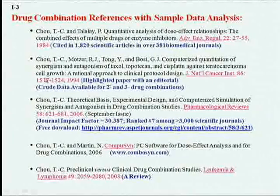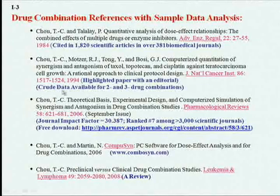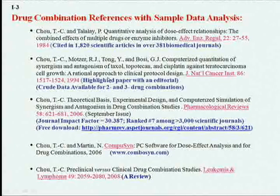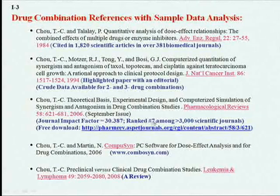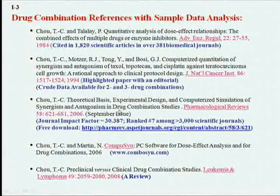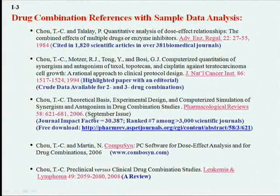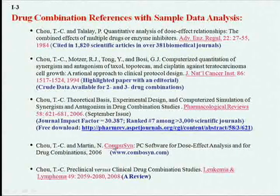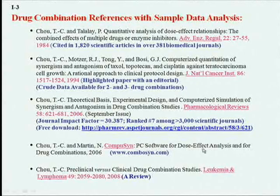One is the Advanced Enzyme Regulation paper I just mentioned. The second one is the JNCI paper, which is highlighted with an editorial, and which gives crude data for two and three drug combinations. I may give this later as an example for presentation. The Pharmacology Review article published in 2006 is my lifetime theoretical work — 35 years of work — and it covers every aspect of drug combination studies. And the computer software, CompuSyn, is the third generation software.